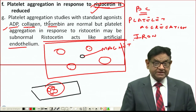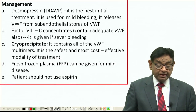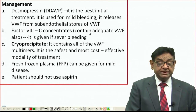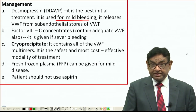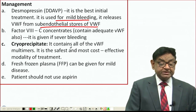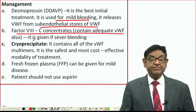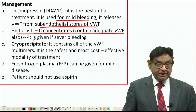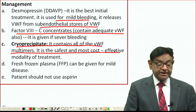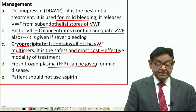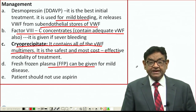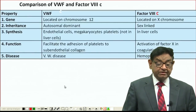For treatment: DDAVP (desmopressin) is the best initial treatment and is used for mild bleeding, as it releases von Willebrand factor from sub-endothelial stores. For severe bleeding, we can give Factor 8 concentrate, which also contains adequate von Willebrand factor. Cryoprecipitate contains all of the von Willebrand factor and is a safe and cost-effective treatment. Fresh frozen plasma can be given for mild disease, but patients should not take aspirin.